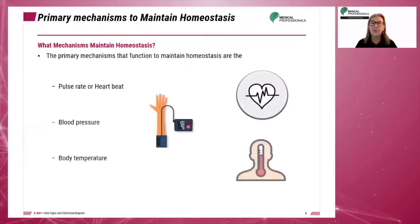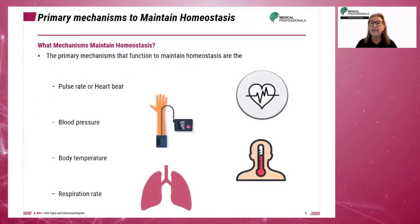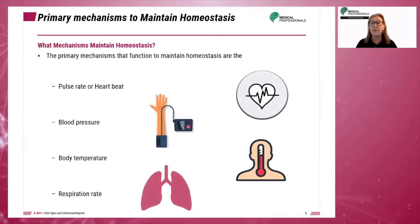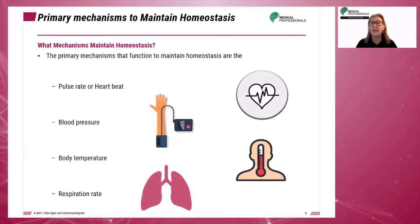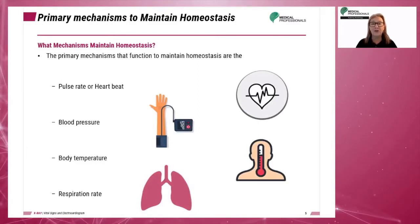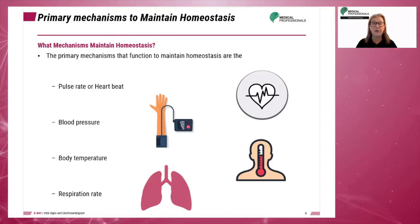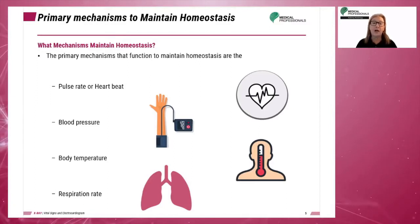The primary means that our body uses to maintain homeostasis are the pulse rate or heartbeat, blood pressure, body temperature, and respiration rate. These are our vital signs.